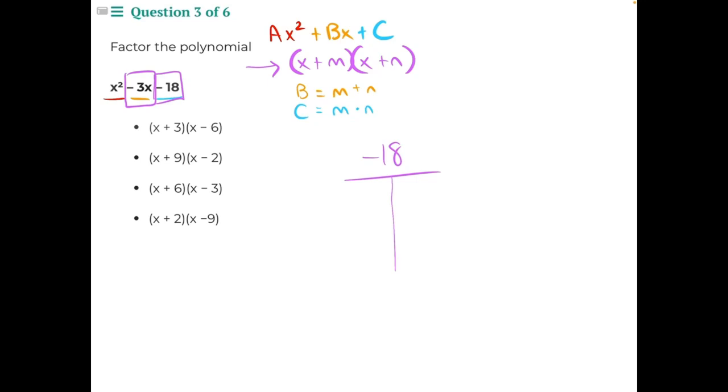So we could do positive 1 and negative 18, negative 1 and positive 18, 2 and negative 9 and vice versa, 3 and 6, negative 6 and vice versa.